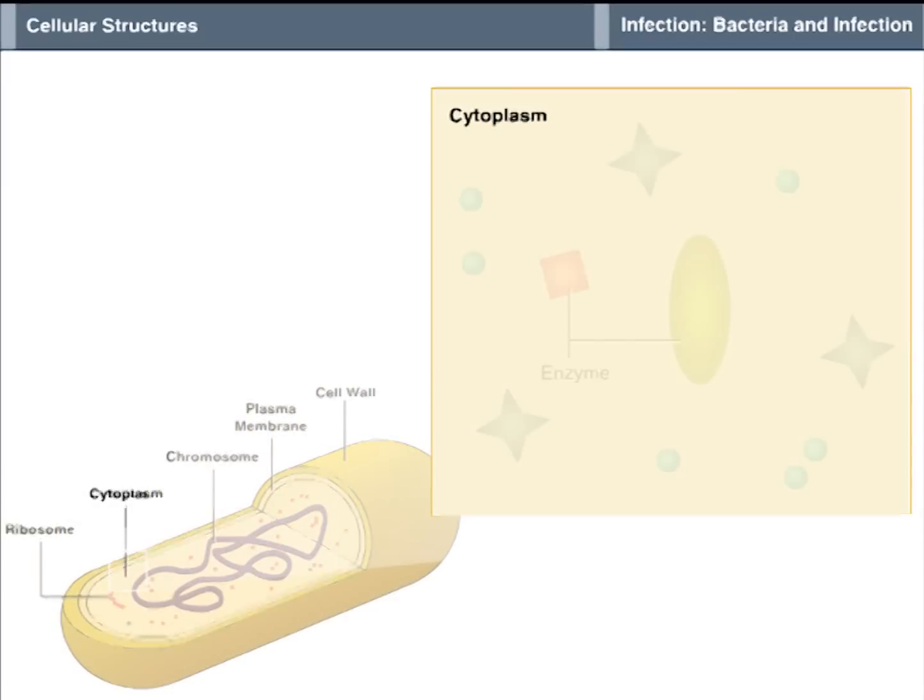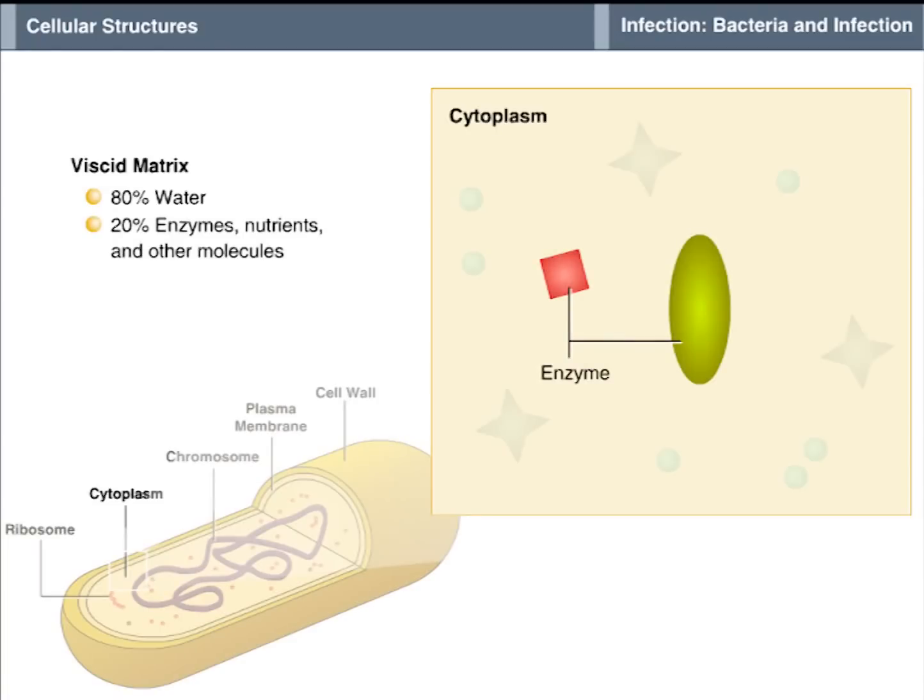Cytoplasm is the viscid, thick, sticky substance that serves as the matrix for all the interior contents of the cell. Cytoplasm is made up primarily of water, accounting for 80% of the total content. It also contains enzymes, nutrients such as carbohydrates and lipids or fats, and other molecules.